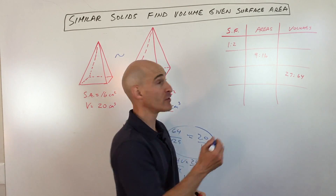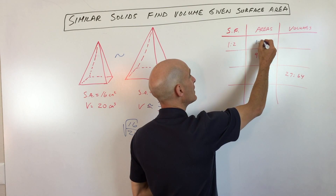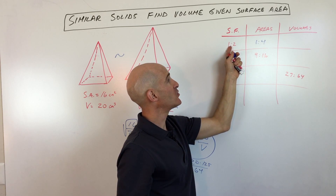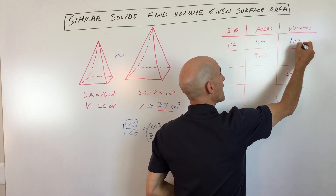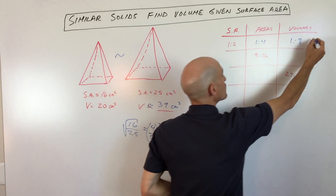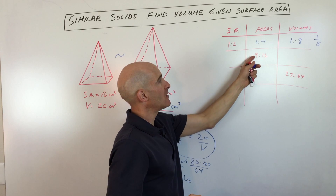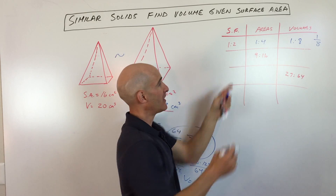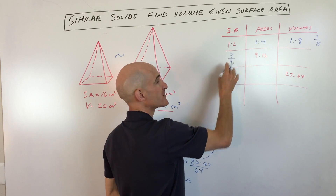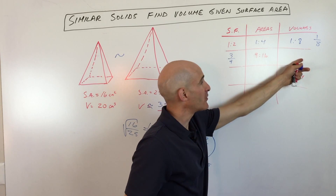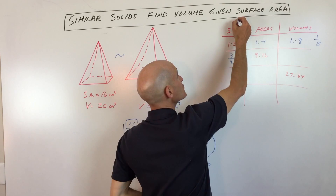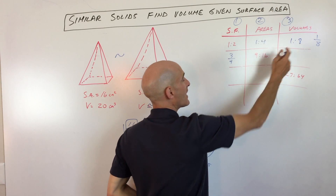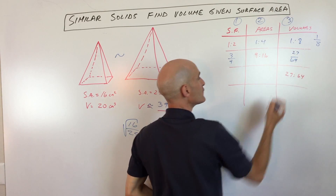The tricky question is when they give you the volume and you want the ratio of the surface areas, or give the surface area and you want the ratio of the volumes. I recommend finding the scale factor first, then square it to find the ratio of the areas, or cube it to find the ratio of the volumes. Looking at a chart: if the scale factor is 1 to 2, the ratio of the areas is 1 to 4 (squaring each), and the ratio of the volumes is 1 to 8 (cubing each).